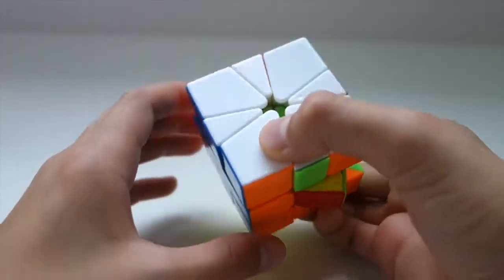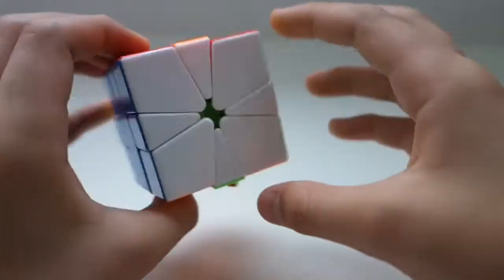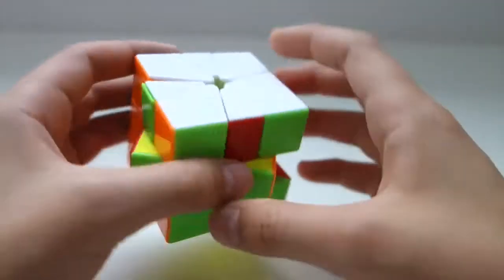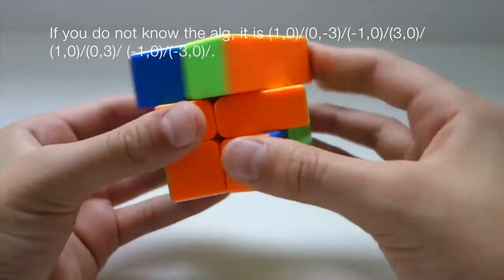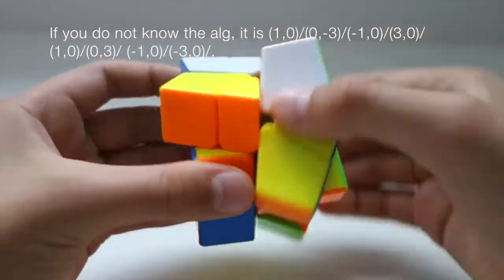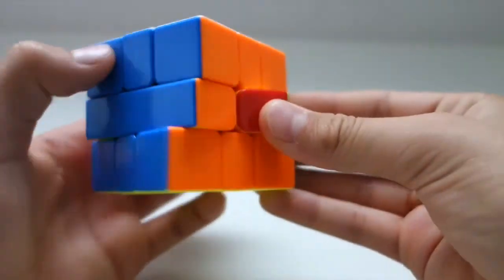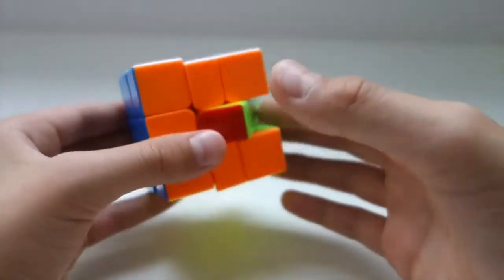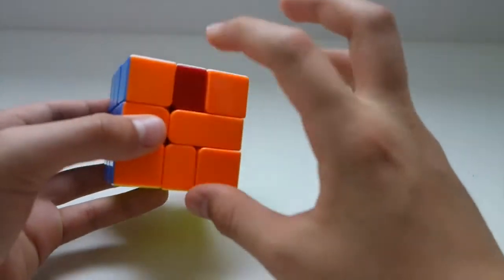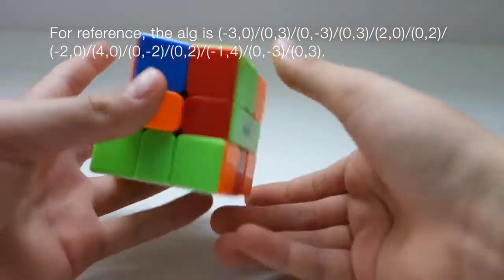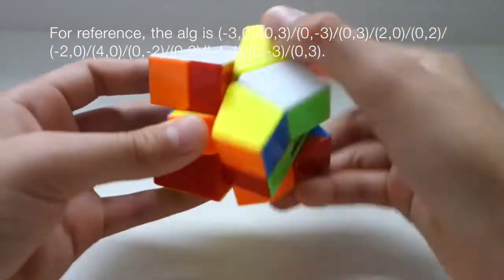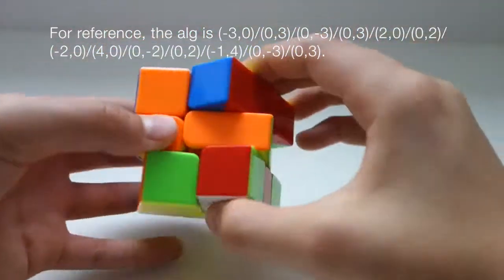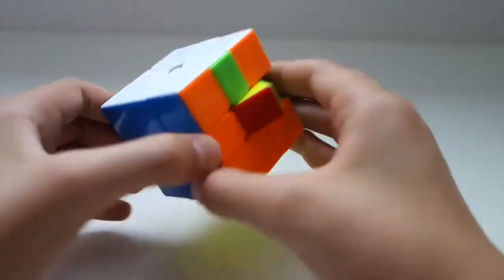When we do that, the cube will actually not be solved, but it will no longer have parity and will instead have a simple edge permutation case. You would just execute the algorithm for this case. And of course, you may have equator issues, and I will go over those very soon. Once again, how to solve this parity case is simply executing the standard parity algorithm for the case that I showed before this, and you are left with an edge permutation case.